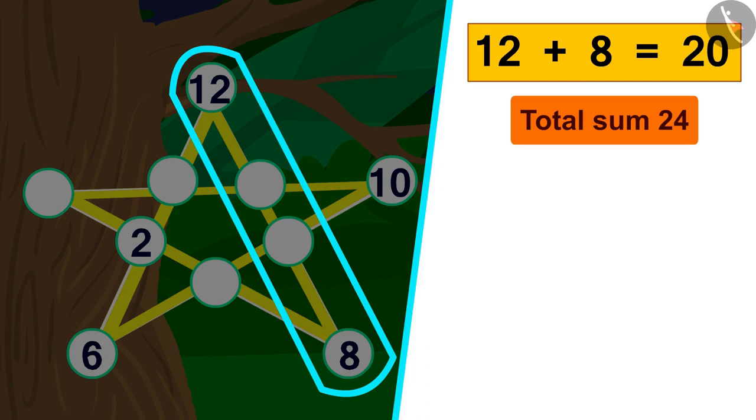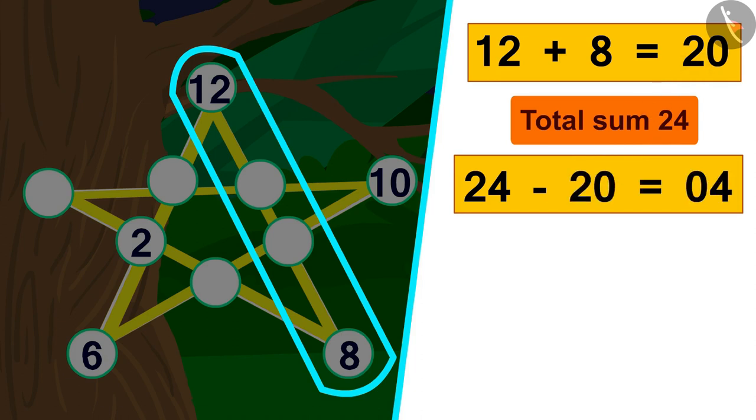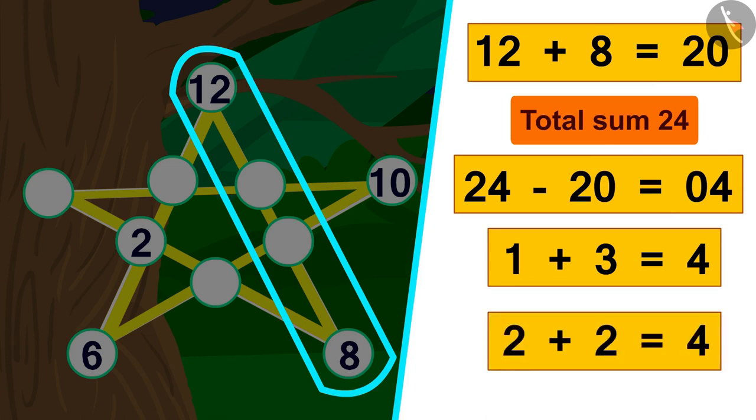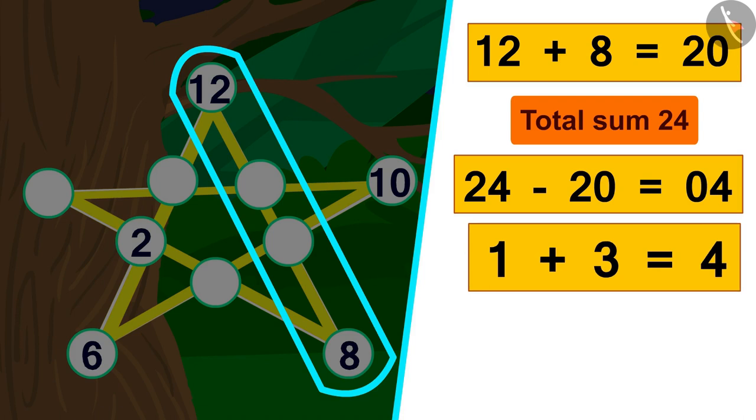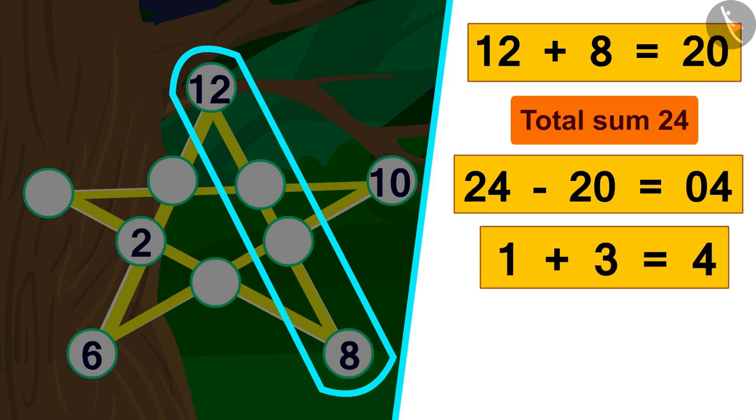This means that in these two spaces, we have to write numbers whose sum is 24 minus 20, or 4. We can write 4 by adding 1 and 3, or by adding 2 to 2. But when adding 2 to 2, the number is being repeated. That is why we will write numbers 1 and 3 in the empty spaces of this edge.